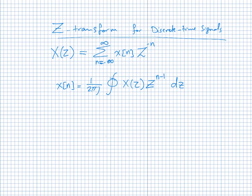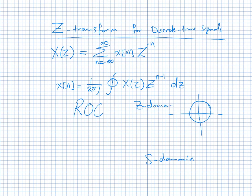The Z-domain is a generalized frequency domain for discrete time, analogous to the S-domain for continuous time. The region of convergence in the Z-domain corresponds to regions outside or inside certain circles, while in the S-domain it is regions to the right or left of a vertical line. We won't go into complicated Z-transform details — just simple transforms from the table with a region of convergence for the final exam.